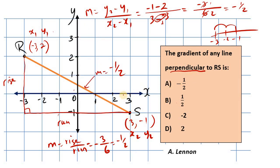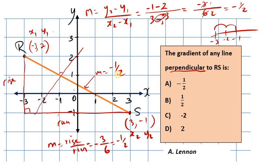Now, what about a line running perpendicular to RS? Any line meeting it at 90 degrees would have a gradient that is the negative reciprocal. Since the gradient of RS is negative 1 half, a perpendicular line would slope upwards from left to right — making it positive. The reciprocal of 1 over 2 is 2 over 1, which equals 2. So the answer is positive 2, option D.